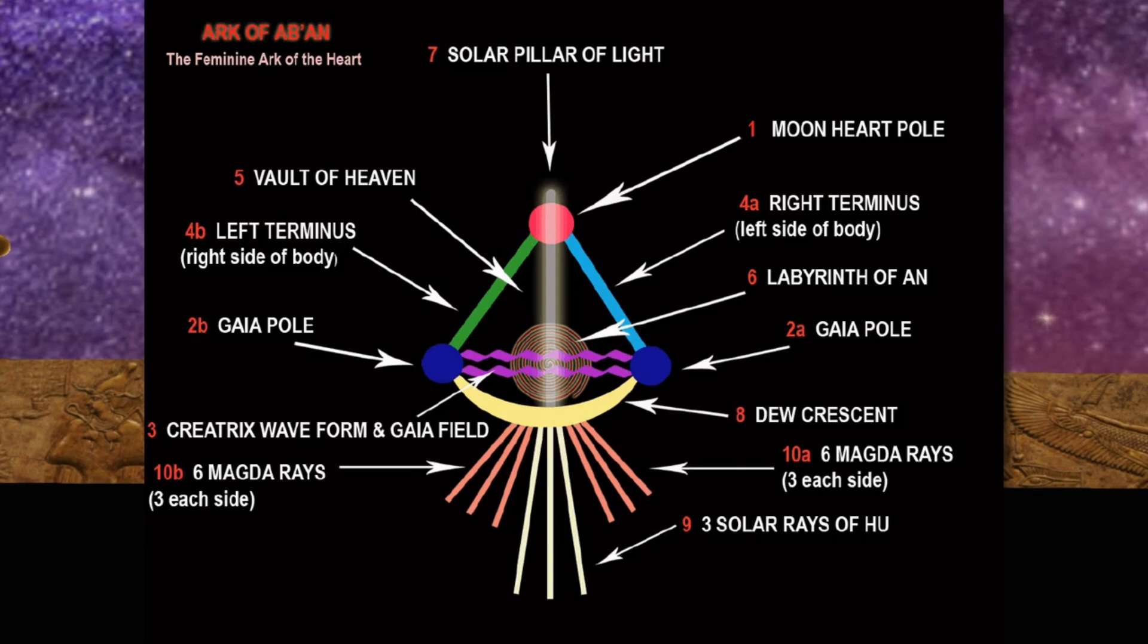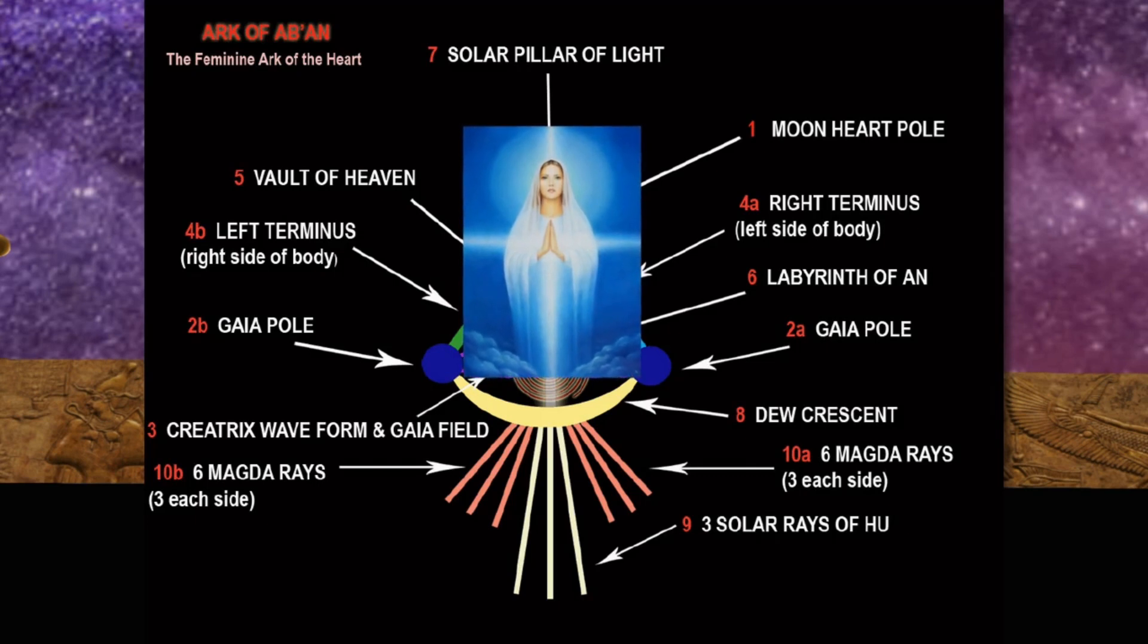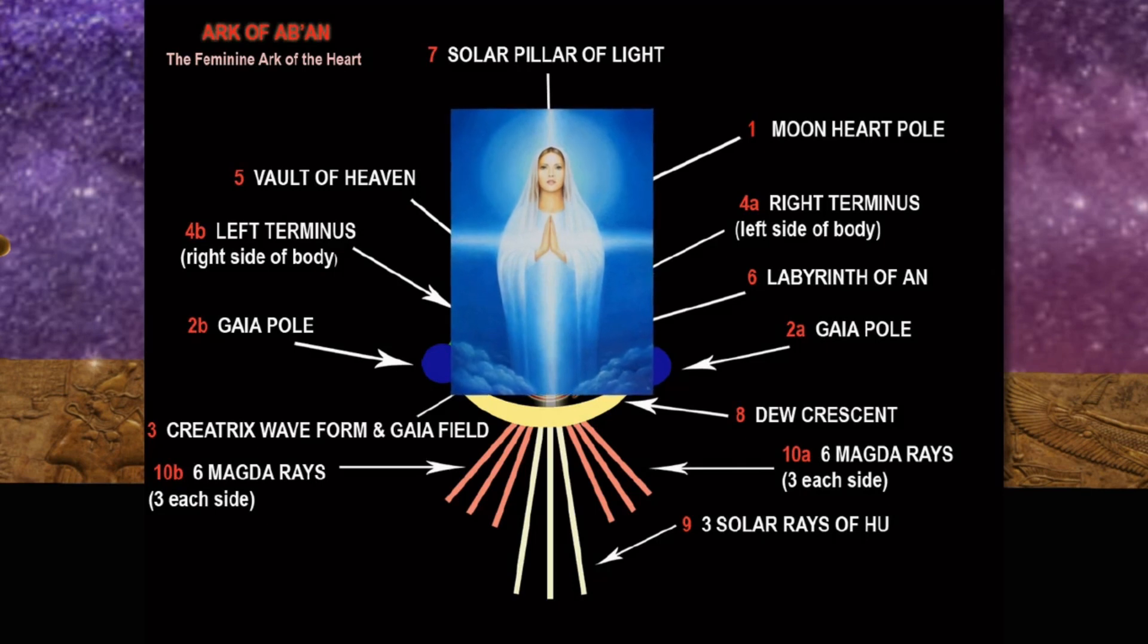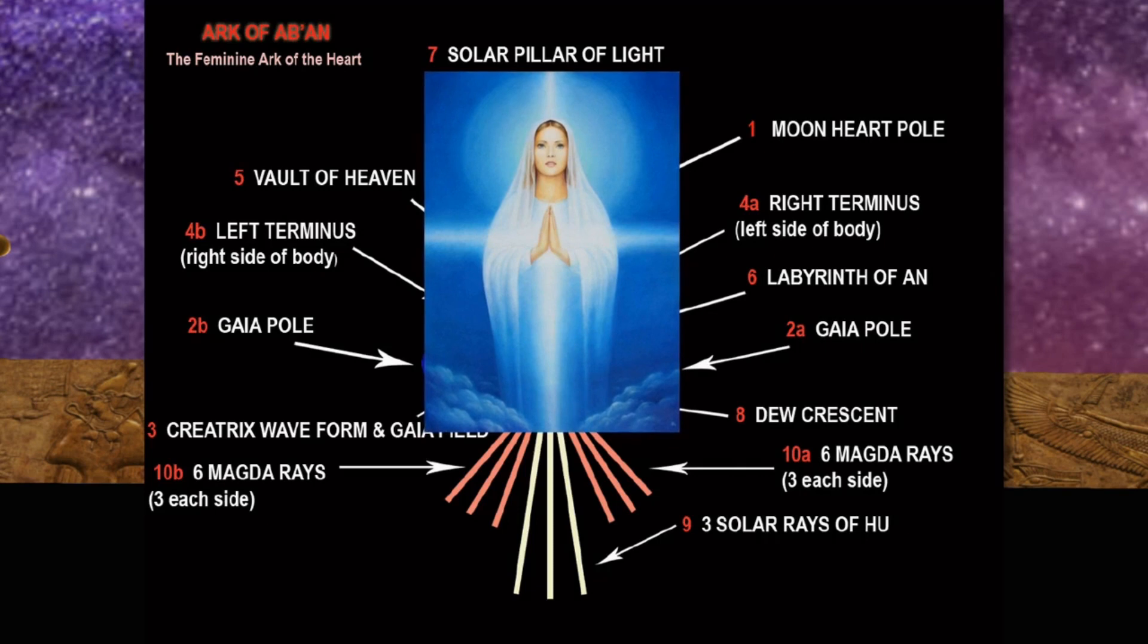The first node, moon heart pole, allows the female to become the vessel not only for a child, but for the perpetuation of creatrix current through the species. It is the special chip inserted into the heart arc mechanism, which gives the whole Merkaba intelligence to interface with the creatrix field of Gaia.